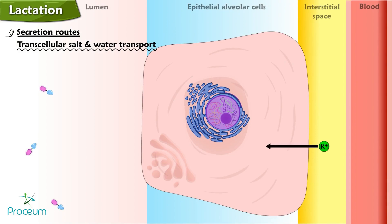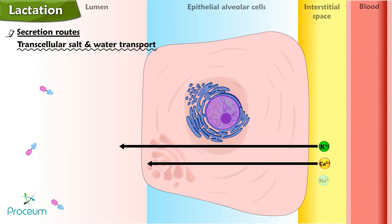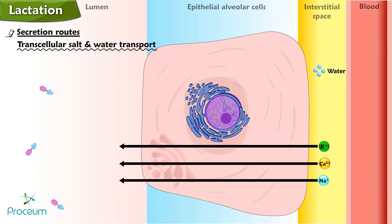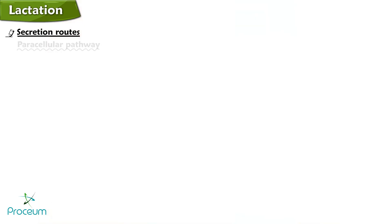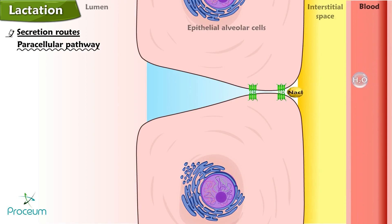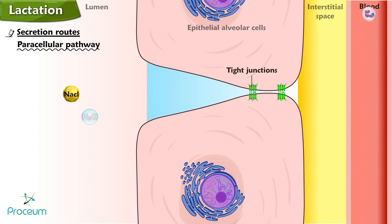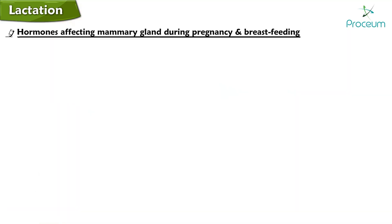In transcellular salt and water transport, a variety of transport processes at the apical and basolateral membranes move small electrolytes from the interstitial fluid into the lumen of the alveolus. Water follows an osmotic gradient generated primarily by lactose, present at a final concentration of 200 millimoles, and to a lesser extent by electrolytes. In the paracellular pathway, salt and water can also move into the lumen via tight junctions; in addition, cells — primarily leukocytes — also squeeze between cells and enter the milk.